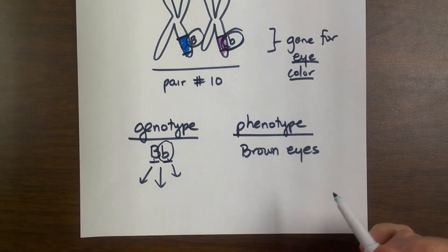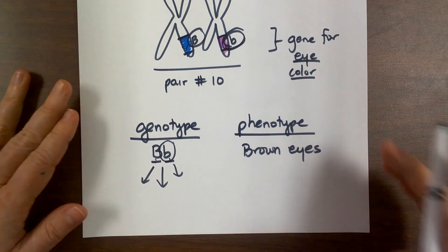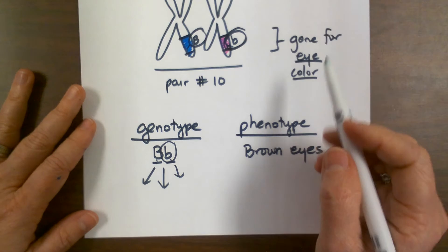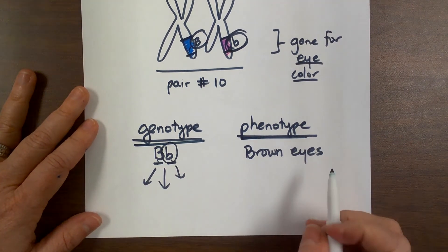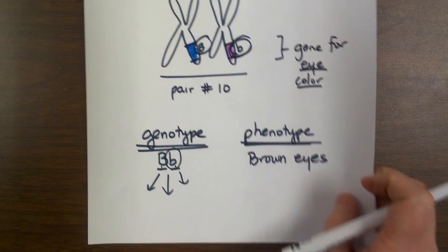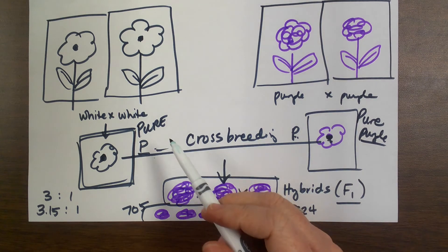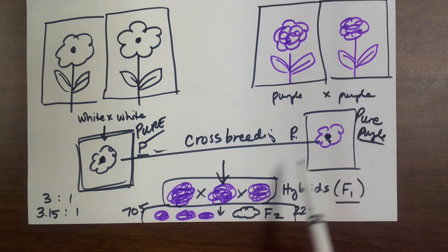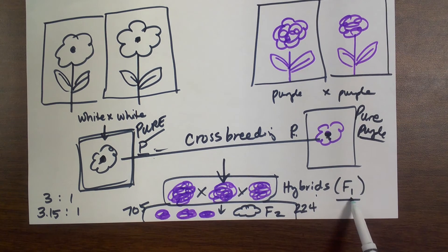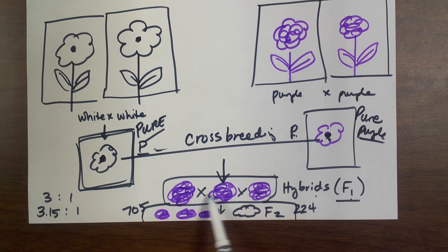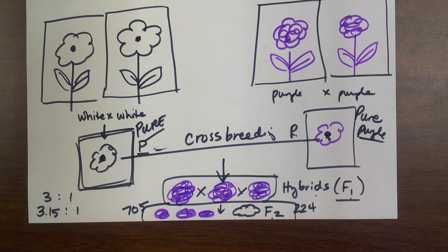With Mendel's experiments we come up with several key words: alleles, genotype, and phenotype. The P generation plants are your pure-breeding parents. When you cross two pures you end up with a hybrid, which is your F1 generation. When the F1s mate with each other they make the F2 generation. Those terms are used a lot.